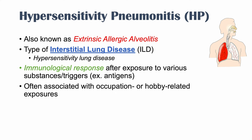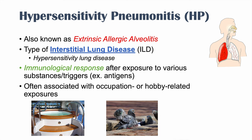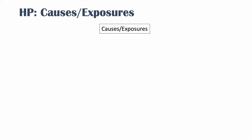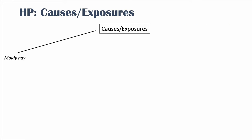This condition is often associated with occupations or hobbies. Certain occupations and certain hobbies are more likely to predispose individuals to hypersensitivity pneumonitis. There are actually more than 300 different causative antigens that lead to this condition. We're going to talk about some of the major ones.